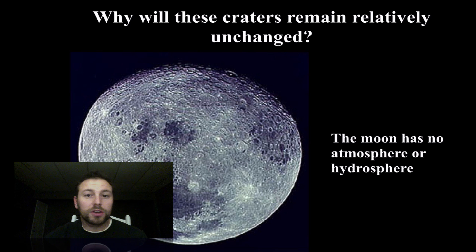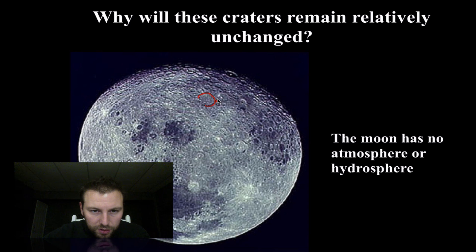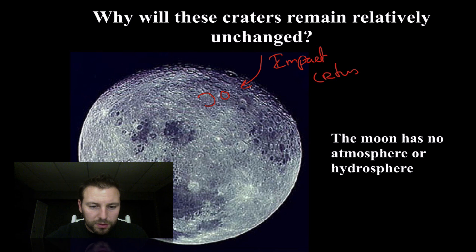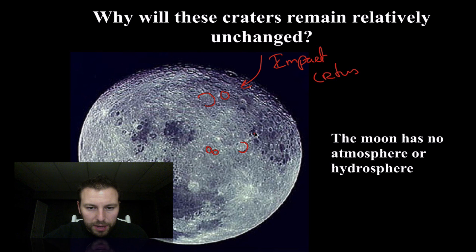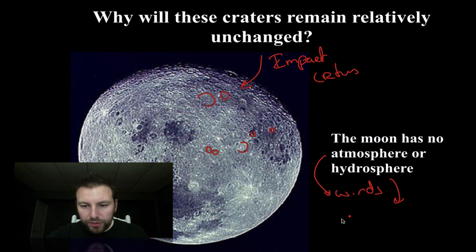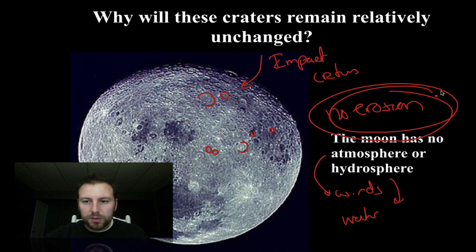We can compare a couple of different places, such as the Earth to possibly the Moon. We can see the surface of the Moon has all of these marks — these circular marks are impact craters, and they're all over the place. These have been unchanged for millions of years. The Moon doesn't have an atmosphere, so with no atmosphere we have no winds and no hydrosphere — no water. If we don't have wind or water, we have no erosion. So no erosion on the Moon because there is no wind, water, atmosphere, or hydrosphere.